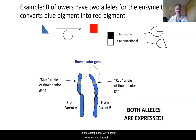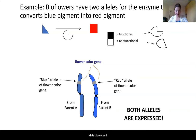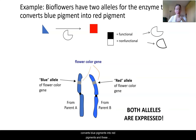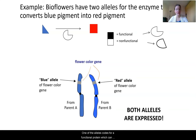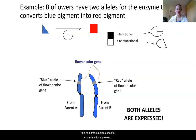The example we're going to work through in this unit is about bioflowers — not a real flower, just a model we use to help explain a relatively complex subject. Bioflowers can be white, blue, or red. They have two alleles for an enzyme that converts a blue pigment into a red pigment. One allele codes for a functional protein that can convert blue pigment to red, and one allele codes for a non-functional protein that cannot.